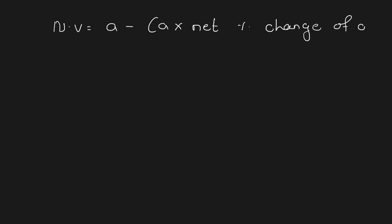In the formula we are using the minus sign because the net percentage change is negative, meaning net decreasing. So we use A minus A into net percentage change of A. The value of A is 240, so it is 240 minus 240 into net percentage change of A, which is 23 percent.